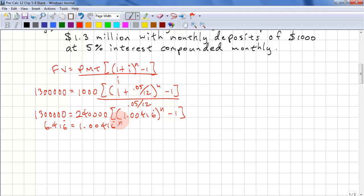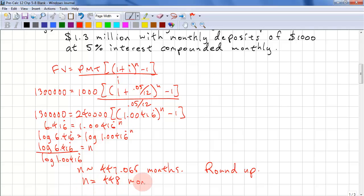So now we have 6.416 repeat equals 1.00416 repeat to the power of n. We need to take the logs of both sides in order to be able to solve for the exponent. Bring the n out front and divide both sides by log 1.00416. So n is approximately 447.065 months.